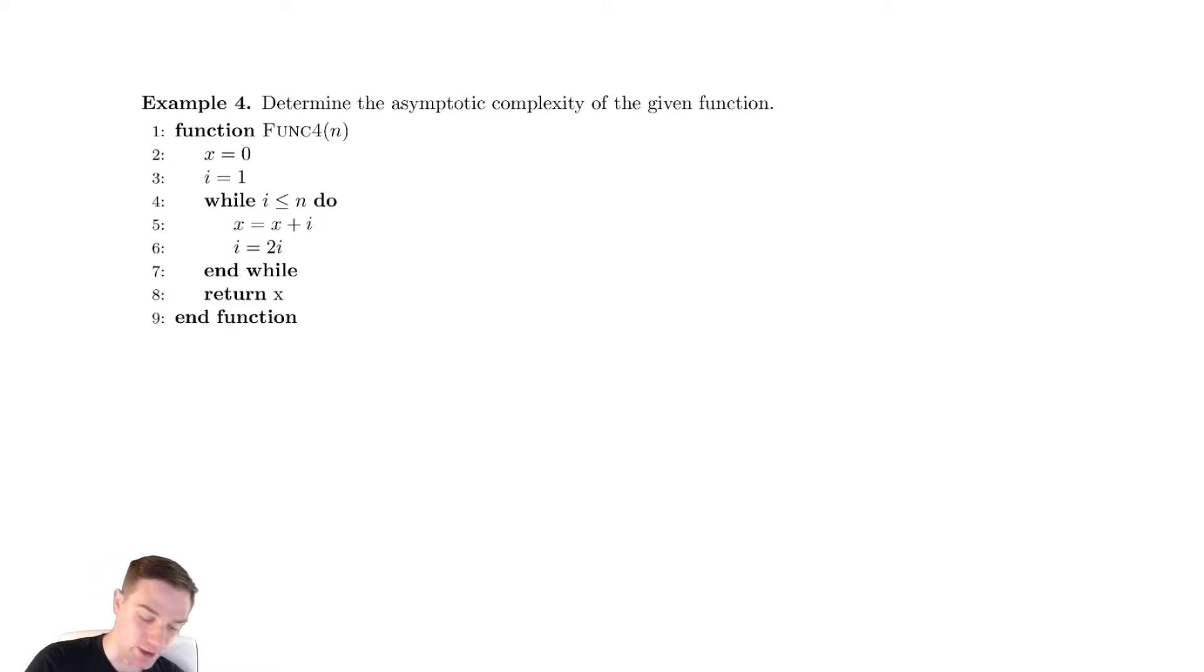In this example, we have another while loop that we're considering, and we've got something slightly different than what we've considered before. How we're updating our variable has been changed, so let's see how we can attack this. All the stuff inside of the while loop takes constant time. We're going to create some sort of iteration table to understand what happens to our loop variable.